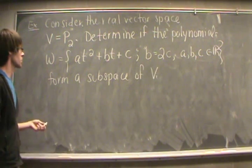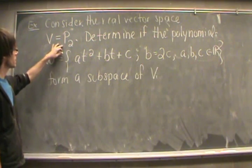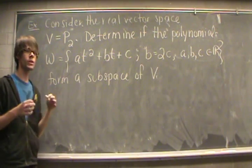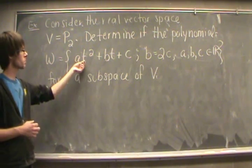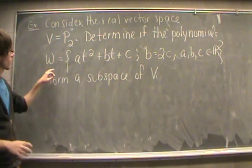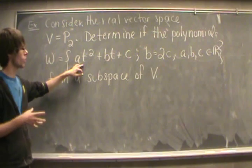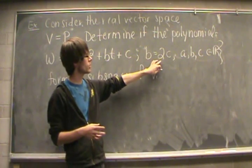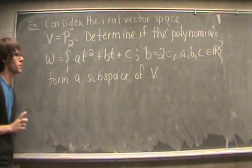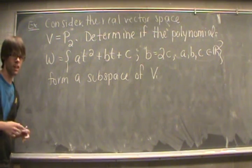Let's jump into an example. We're going to consider the real vector space P2 — the set of all polynomials of degree two or less, written in terms of T. We want to figure out whether this set W, containing all polynomials of degree two or less with the special condition that coefficient B must equal two times coefficient C, forms a subspace of P2.